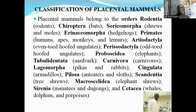Mammals in the subclass Placentalia or Eutheria include: the order Rodentia, which consists of rodents like mice; the order Chiroptera, which has the bats; the order Soricomorpha, which consists of shrews and moles; and the order Euarchontoglires, which consists of the primates — humans, apes, monkeys, and lemurs. We also have the order Artiodactyla, which consists of the even-toed hoofed ungulates, and the order Proboscidea, which consists of the elephants.